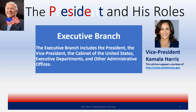The president and his roles — he is over the executive branch. Think of this in terms of executives, like who's in charge of your building. They are the managers in charge. Here's a picture of President Joe Biden. And over here on the right, we have Vice President Kamala Harris.